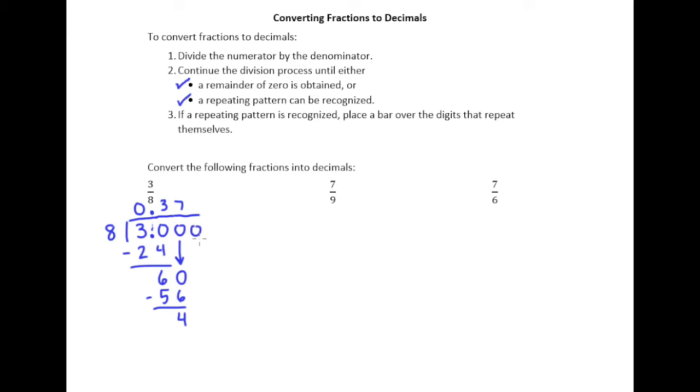Get a remainder of four. Add another zero, drop it down. Eight goes into 40 exactly five times. So we have five times eight is 40. And finally, the remainder is zero. So we're in this first situation here. We continue the division until the remainder of zero is obtained. So three-eighths is equal to 0.375.